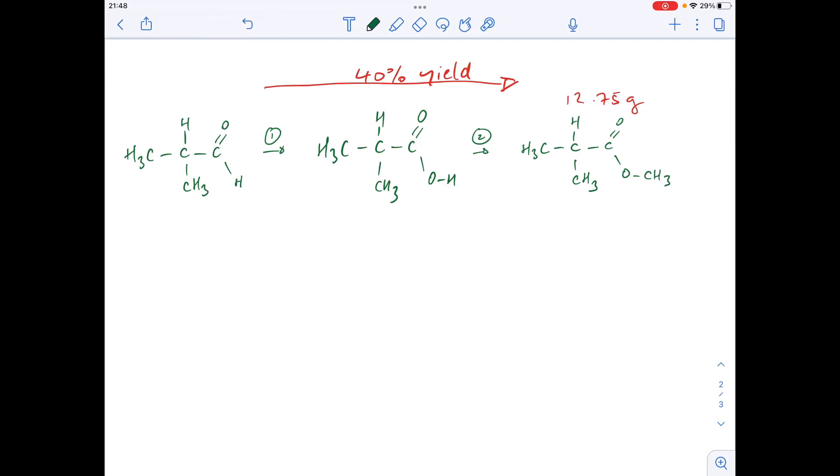We'll move on to the calculation now. We're told that we want to make 12.75 grams of the ester and that there's only a 40% yield in the process. The first thing I'm going to do is calculate how many moles of ester we need to make. That's just mass over Mr, which comes out at 0.125 moles of ester needed.